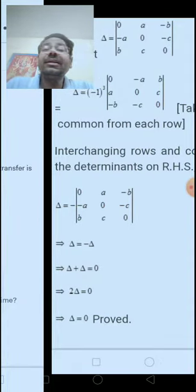In this determinant [0, A, -B; -A, 0, -C; B, C, 0], first of all, take the common from the row.